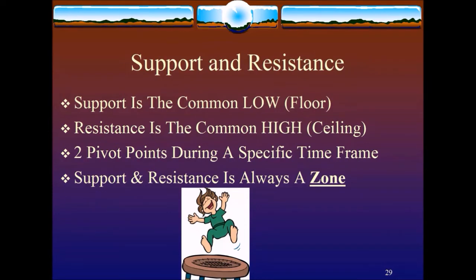It's going to be a zone, and the reason I have a picture of this kid on the trampoline — this is how I remember it. The support is the floor, which is the bottom of the trampoline, and the resistance is the ceiling. So if this kid's jumping up and down, if he hits his head on the ceiling, he's going to pop back down. If he hits the trampoline with his feet, he's going to pop up. This is exactly what the candlesticks will do when you have your support and resistance lines set up correctly — they will bounce off the support and bounce off the resistance. And you'll learn how to trade in this zone according to what the candlesticks are doing.